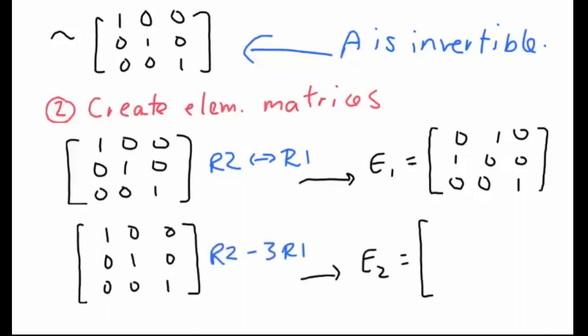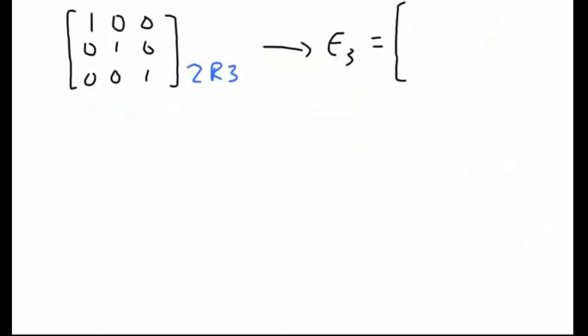Don't forget to start with a brand new identity matrix when you're creating your second elementary matrix. Our second elementary matrix is going to represent row 2 minus three row 1s. And that's going to come out like this. And last but not least, our final elementary matrix is going to represent the row operation 2 times row 3. So here is E3.